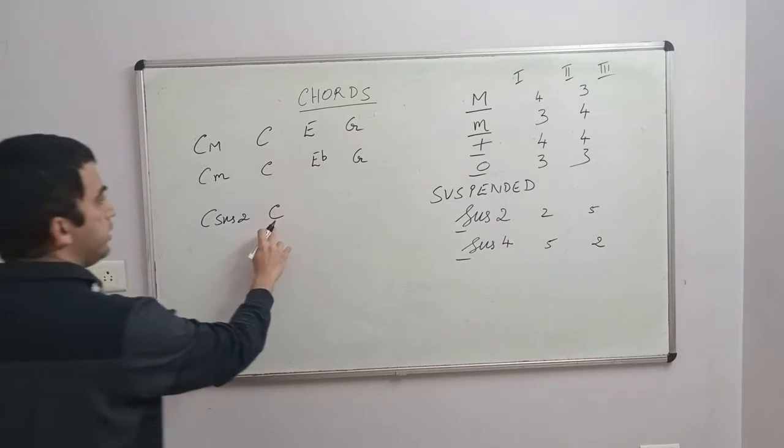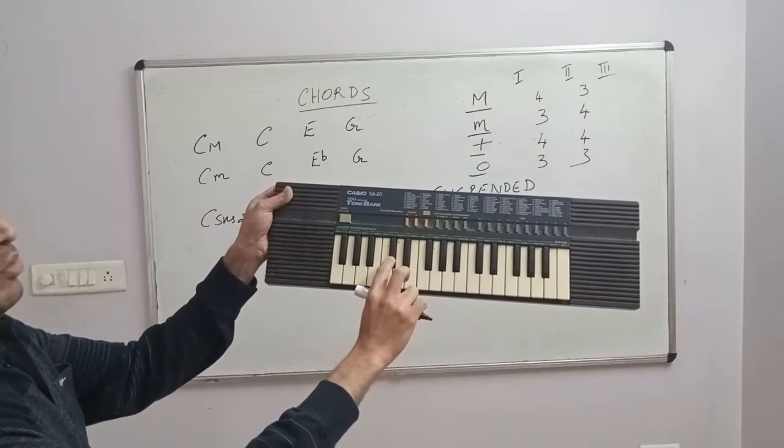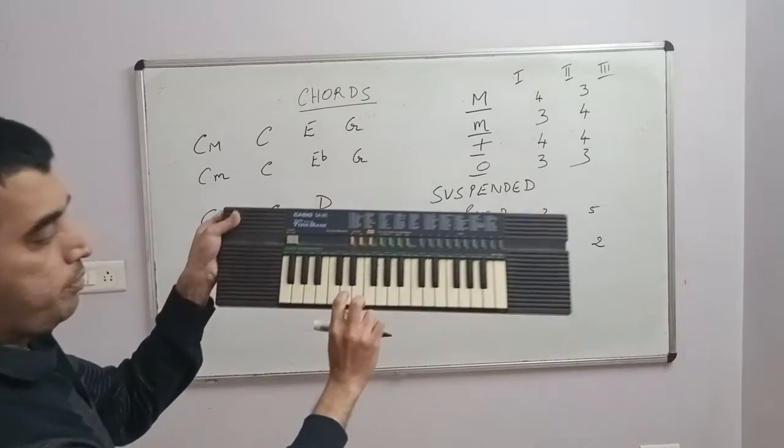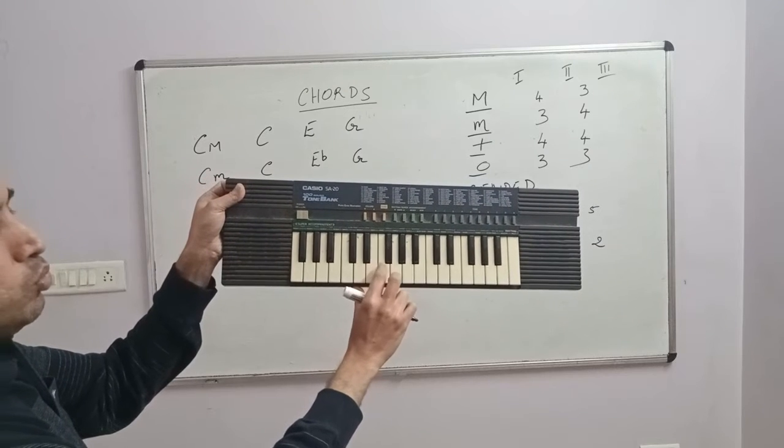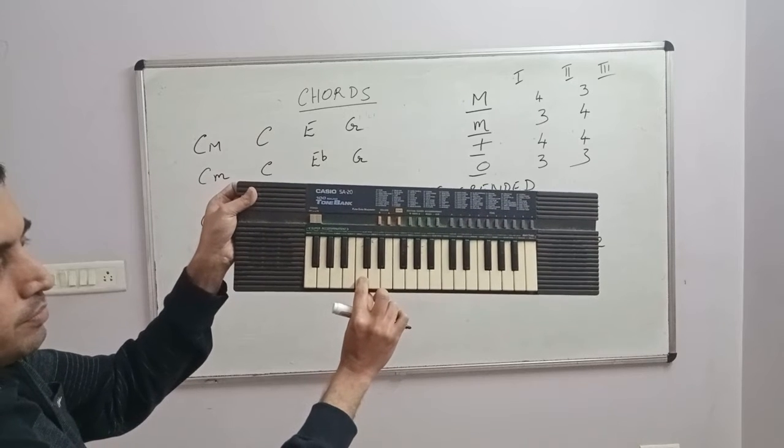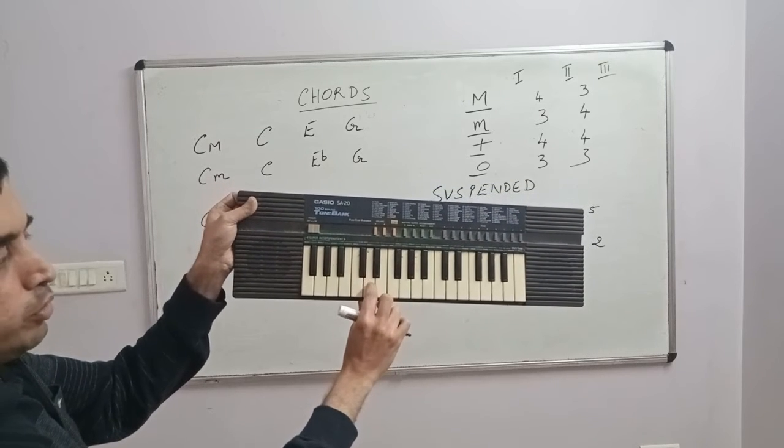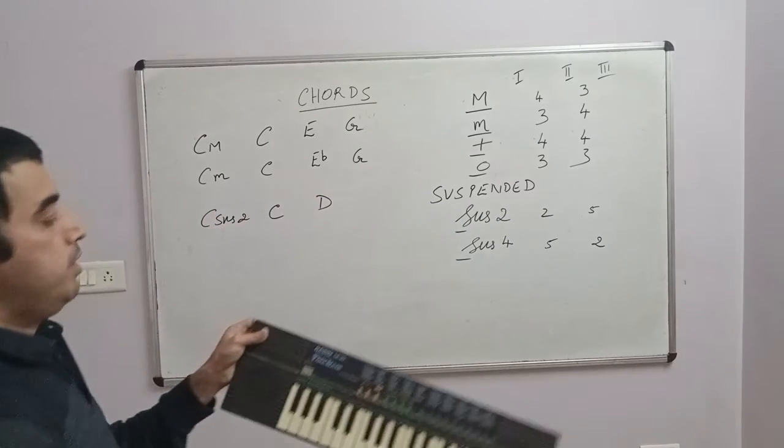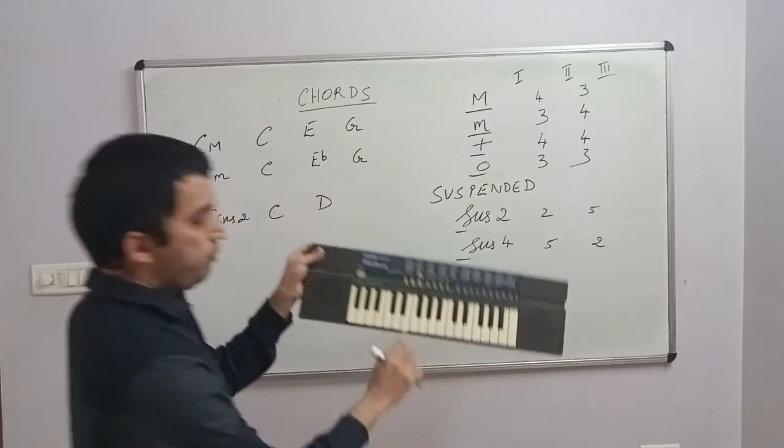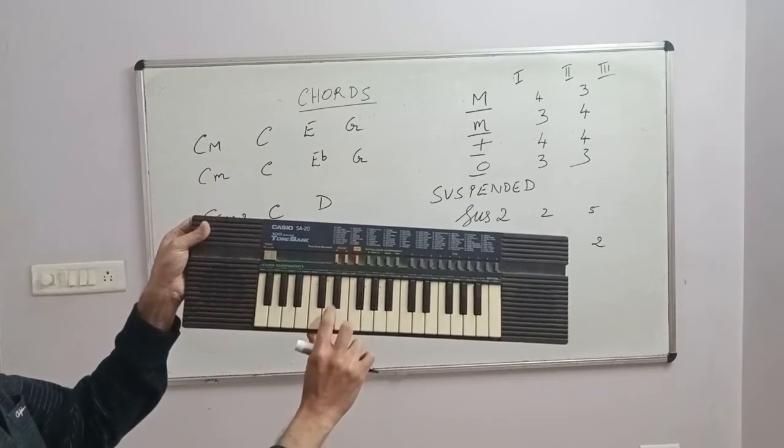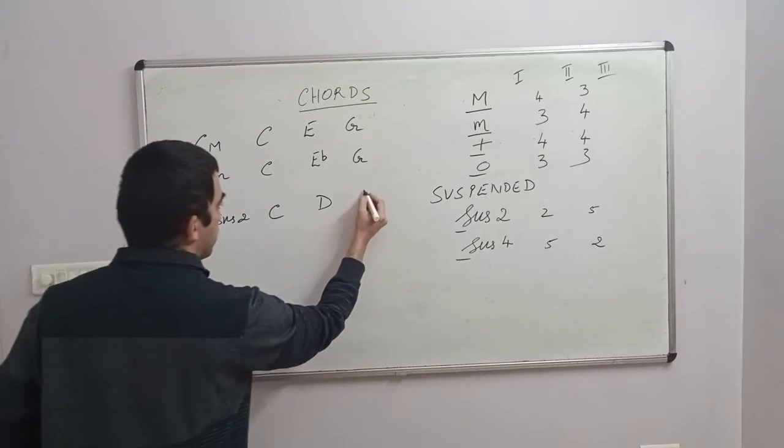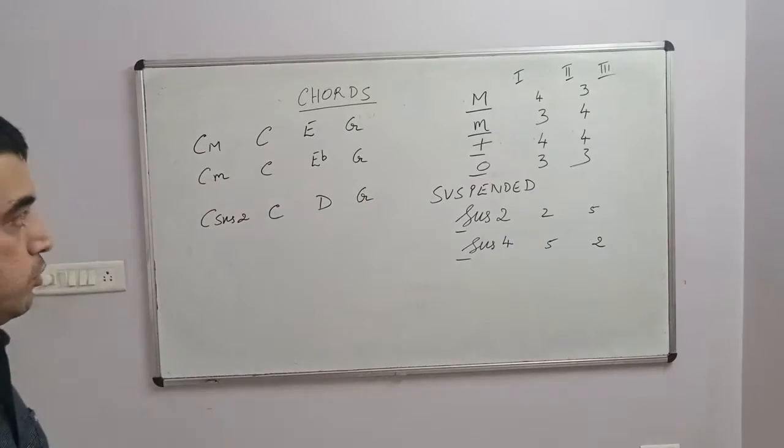Right, C. Then you go two semitones up, it will be D, and then you go five semitones. One, two, three, four, five. Do you follow? So you see the first note, then you go two semitones, one, two. The second note will be D. And the third note will be five semitones from the second note. The second note D is here, so one, two, three, four, five—G.